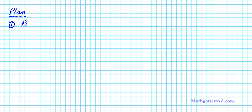All right, to get started, let's go ahead and outline our plan of attack. This is the basic rundown as to how you carry out proofs by mathematical induction. It can be broken down into three parts. The first part is the base case. For this problem, the base case involves showing that n equals 4 is true.